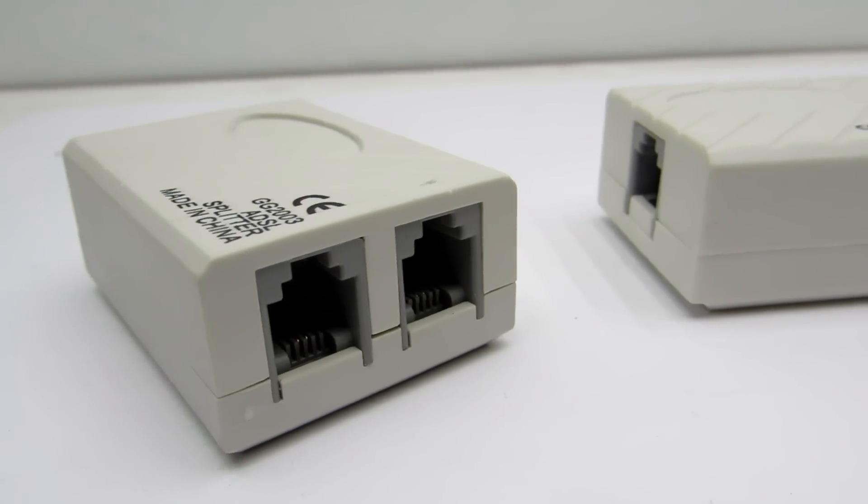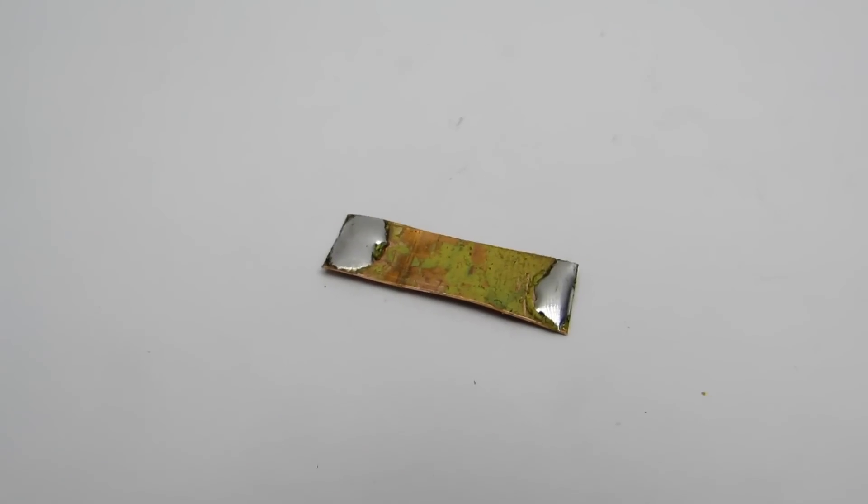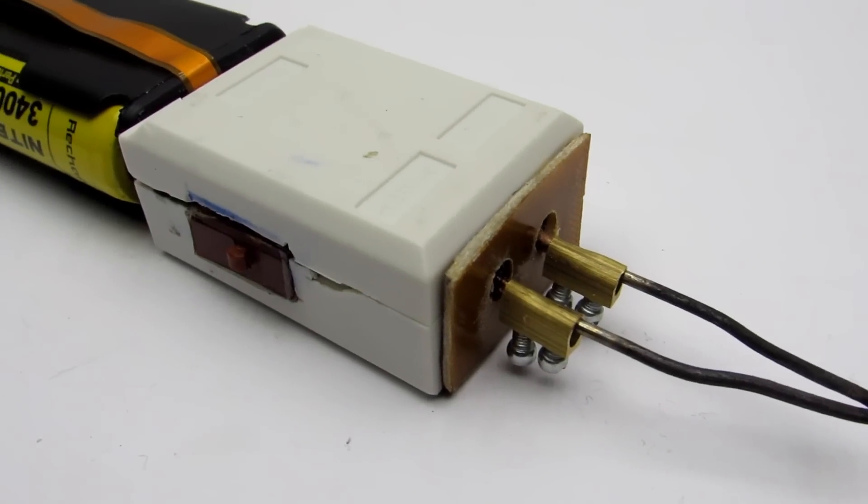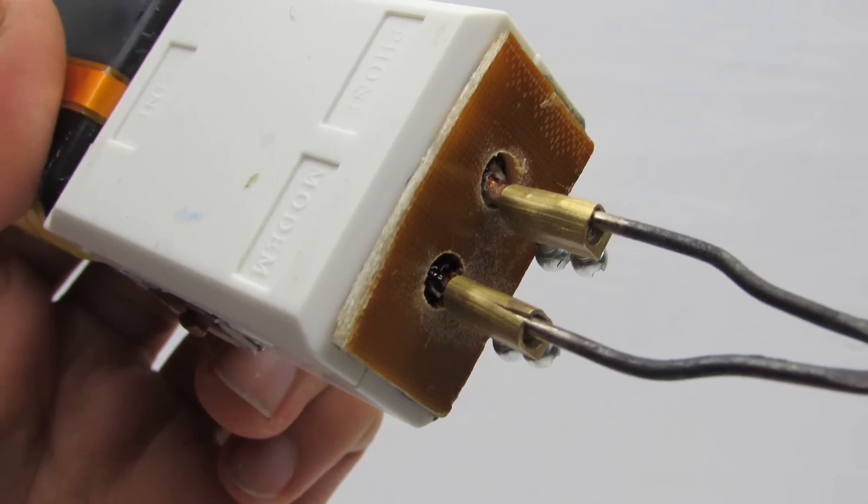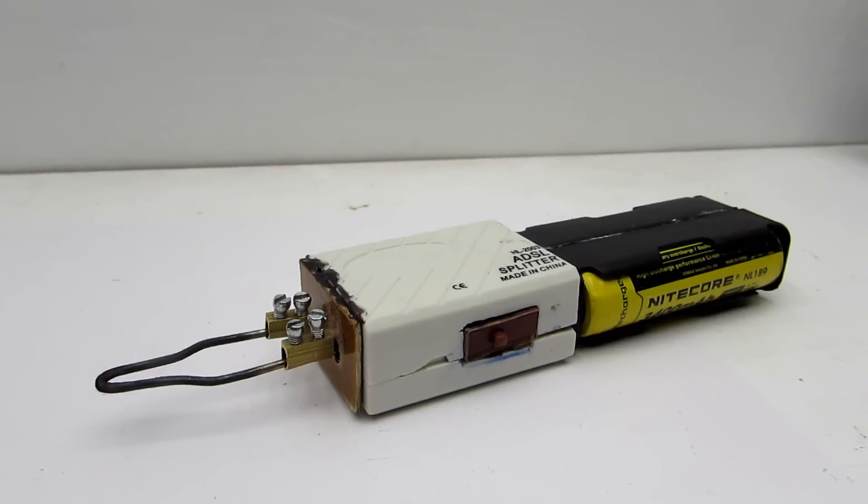As a case for the inverter, I took a plastic box from an ADSL distributor. To connect the power supply I used flat conductors. The soldering tip is attached through standard brass terminals. They're fixed on a little plate of fiberglass. It is desirable to make holes for natural cooling in the box.